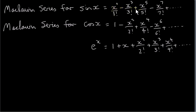If you want to use a series expansion for, say, sine of pi over 3, x has to be in radians. You could plug pi over 3 in for x, and the more terms you take, the closer your answer will be to sine of pi over 3.